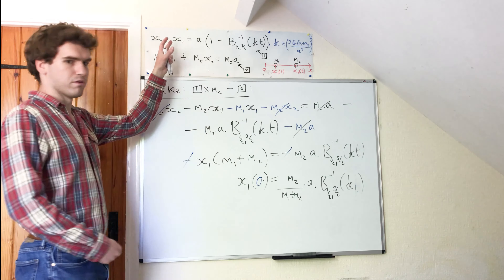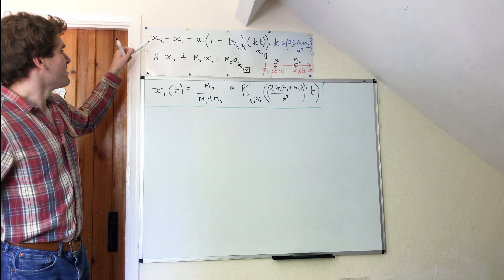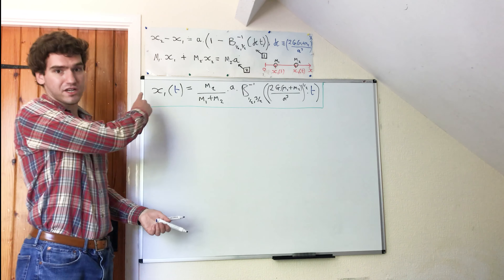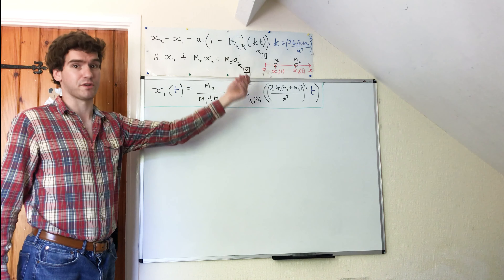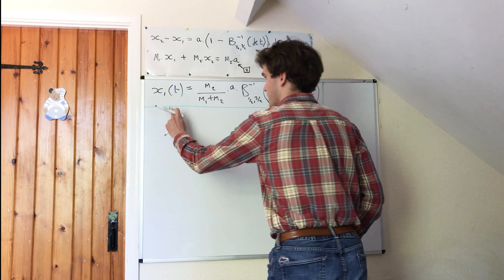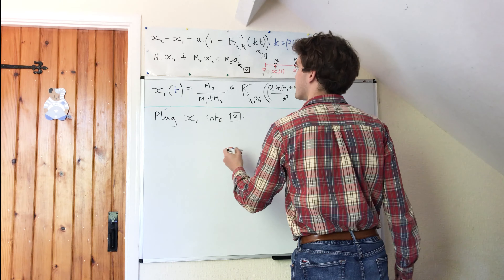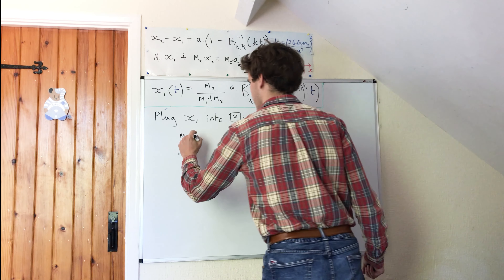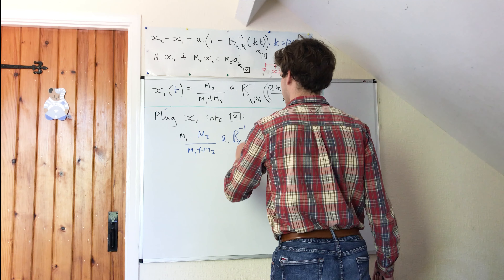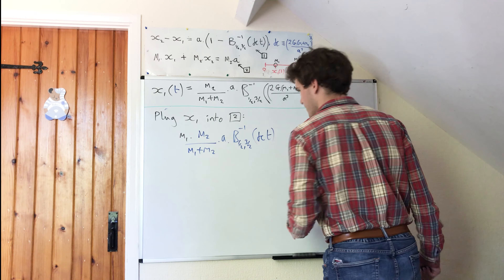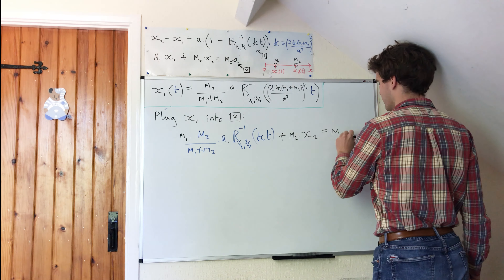So let's figure out what x2 will be. We've got x1, and now we just need to solve for x2 by substituting x1 into one of our formulas and then solving for x2. Formula two looks nicer, so let's plug x1 into formula two. Therefore we get m1 multiplied by m2 over m1 plus m2 multiplied by a times the inverse incomplete beta function, half three over two, of kappa t, plus m2 times x2 equals m2 times a.